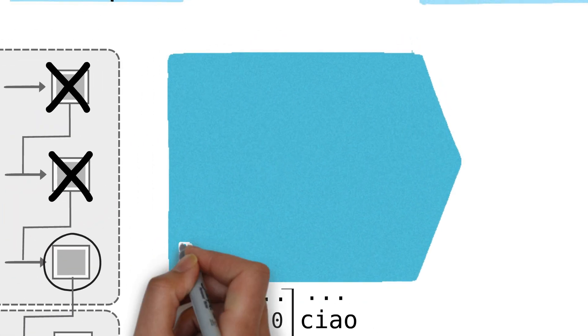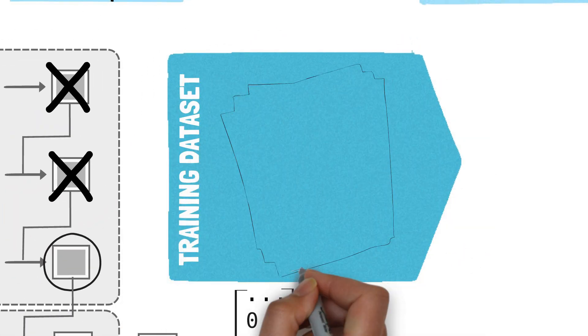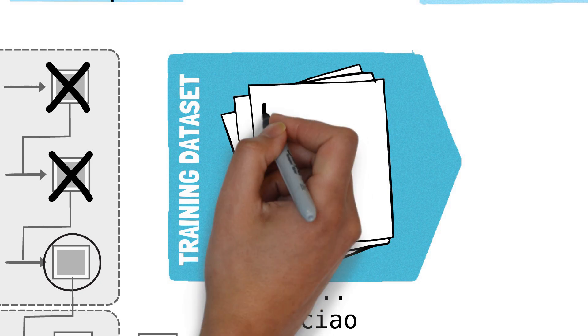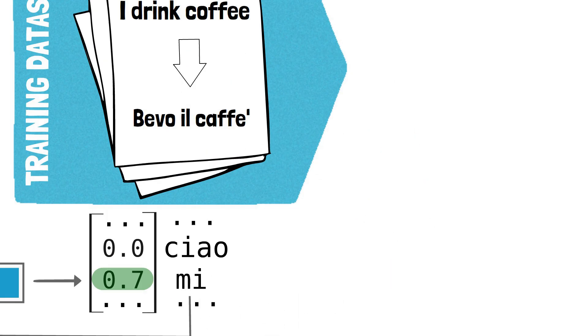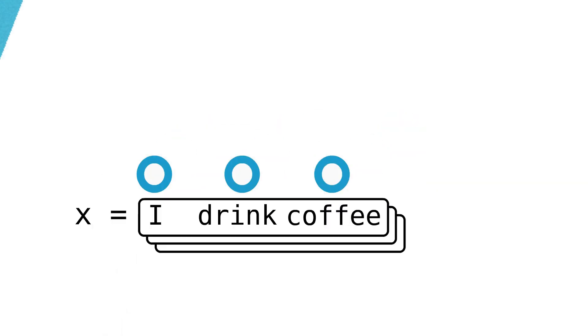To train this model, we need to create a dataset with sentence pairs, an input sentence in English and the target sentence in Italian. We pass the English sentences through the encoder, collect the final hidden state and pass that to the decoder.